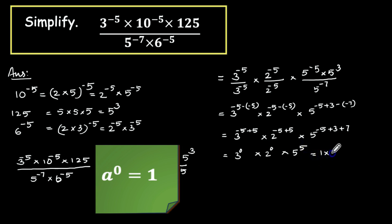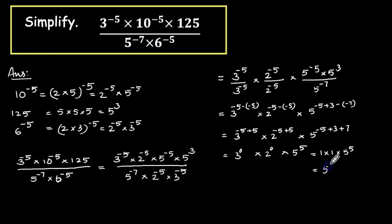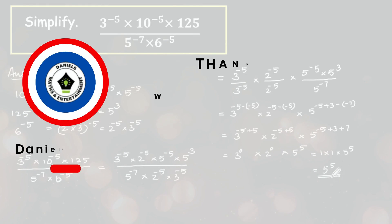So the result is 1 into 1 into 5 raise to 5, which is 5 raise to 5. I hope it's clear.